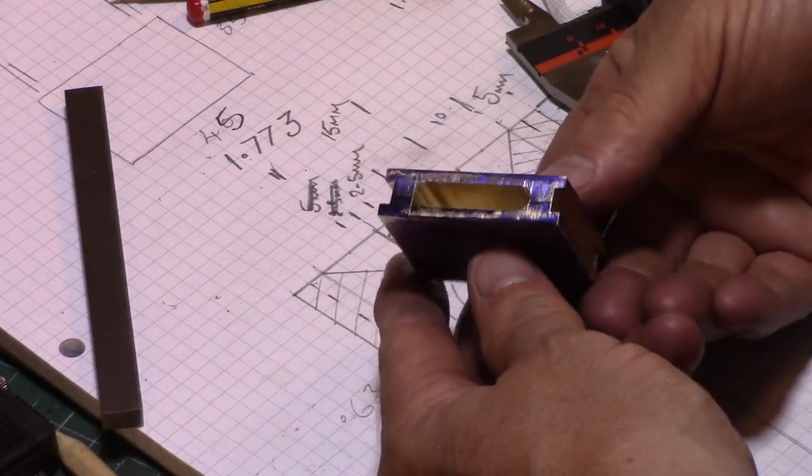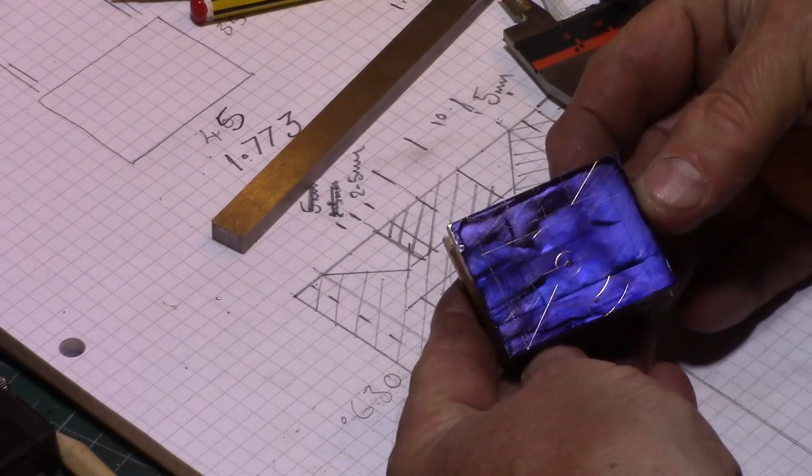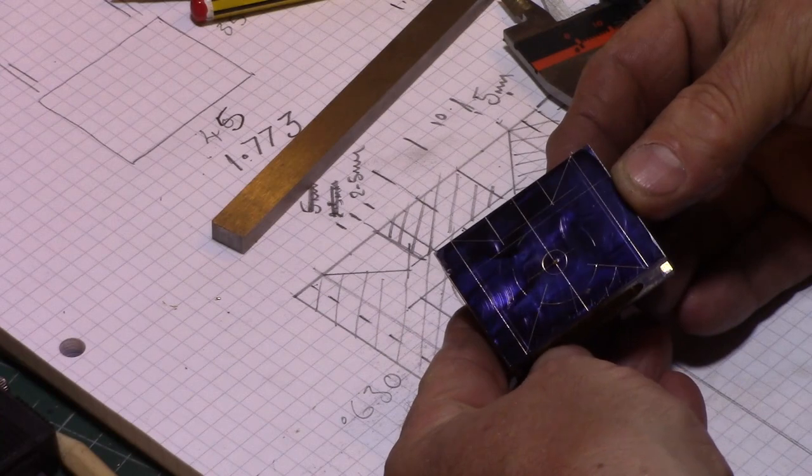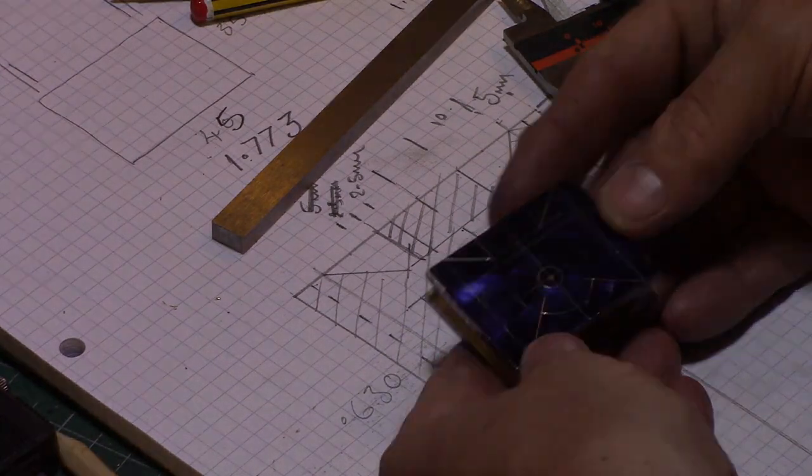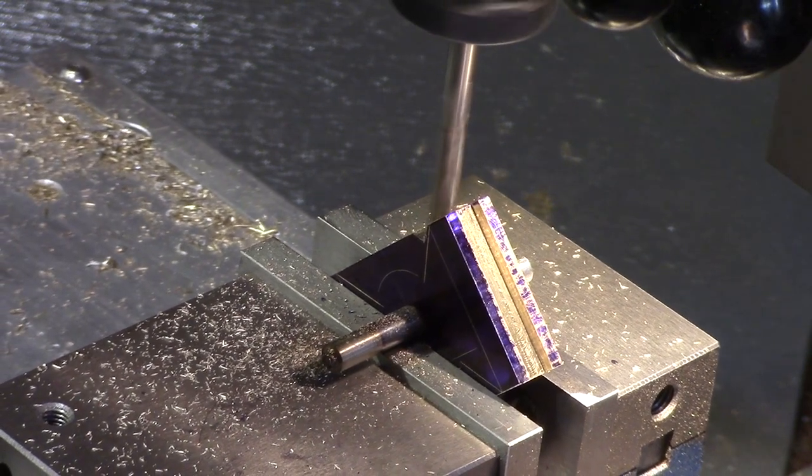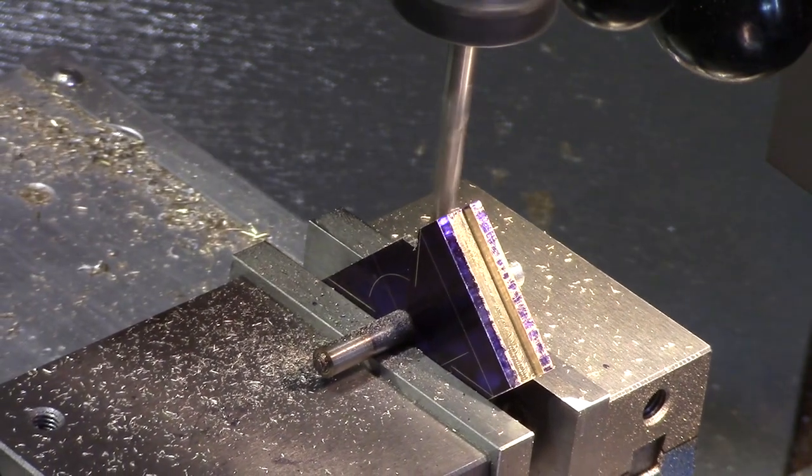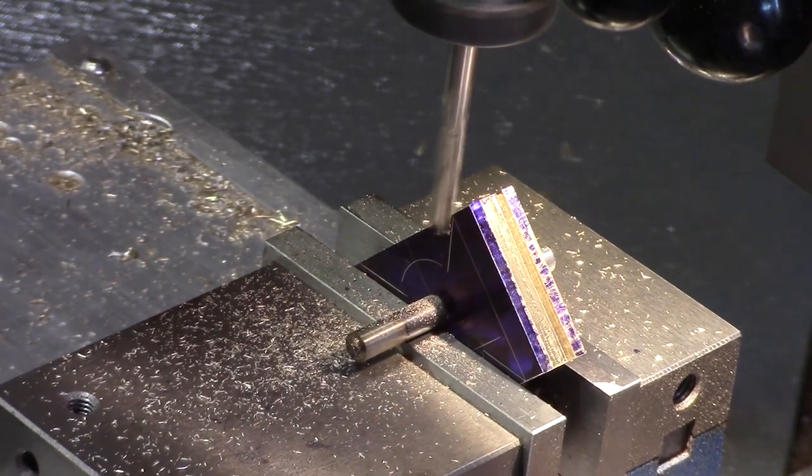The block was then marked out in readiness for drilling the pinion hole and creating the shape on the milling machine. This was then mounted in the milling vise and the material machined away to my mark outlines. Once one side was done, it was flipped around and the opposite side was milled in the same manner.